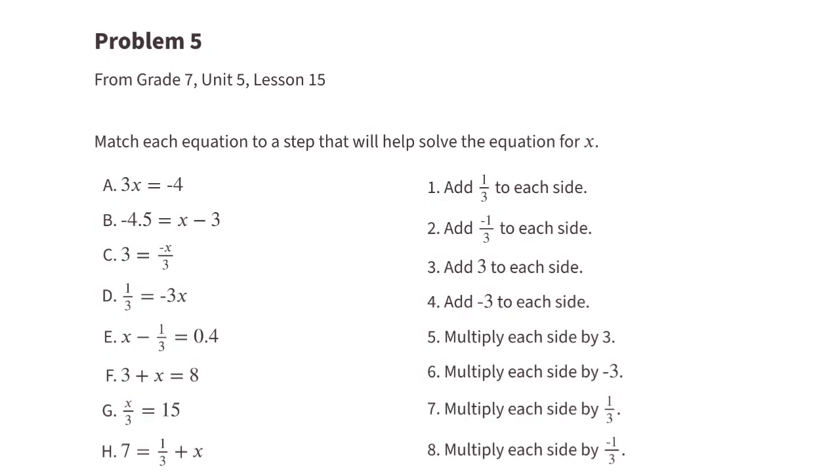Problem number five, from seventh grade unit 5 lesson 15: match each equation to a step that will help solve the equation for X. For equation A, we need to divide both sides by 3 to make one X, and that's the same thing as multiplying both sides by one-third. For equation B, we need to add 3 to both sides.